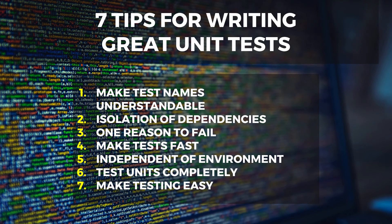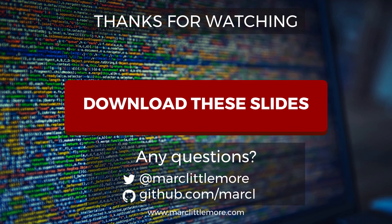As a summary, seven tips for writing great unit tests: One, make test names understandable. Two, isolate dependencies, especially external services. Three, give each test one reason to fail. Four, make your tests super fast. Five, make sure they're independent of environment. Six, try to test as much as you can — happy paths, unhappy paths, edge cases. And seven, make testing really easy by automating it as part of your build process. Thanks for watching. If you want to download these slides, click the button or check the link in the description. Hit me up on Twitter, GitHub, or marklittlemore.com, and I'll do another video about testing soon.